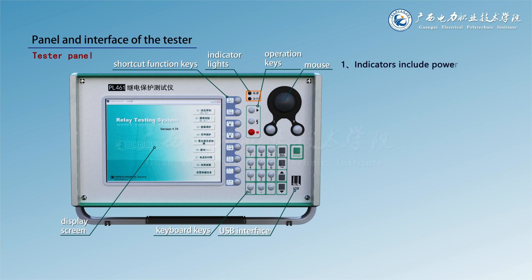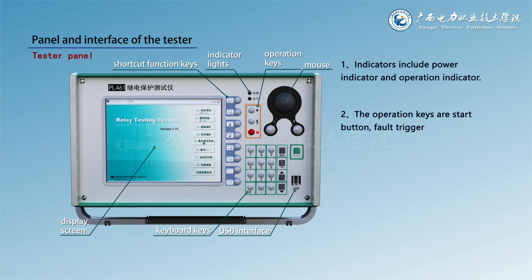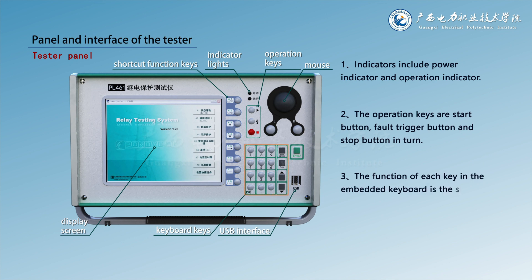Indicators include the power indicator and operation indicator. The operation keys are, in turn, the start button, fault trigger button, and stop button. The function of each key in the embedded keyboard is the same as that of the corresponding key in the external keyboard.